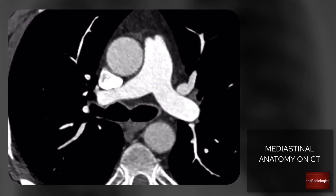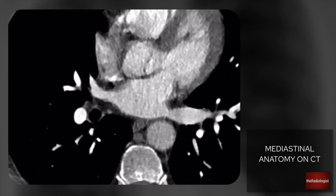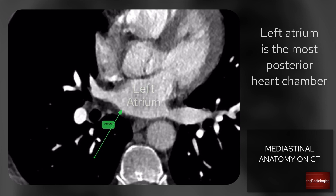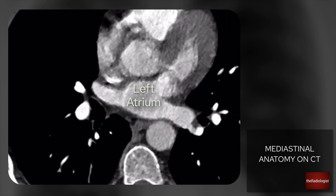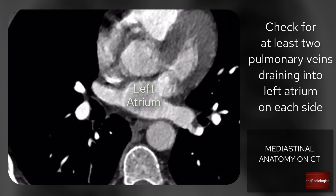The pulmonary arteries take deoxygenated blood out to the lungs and blood returns via this spider-like structure — the left atrium, which is the most posterior heart chamber. The number of pulmonary veins draining into the left atrium should be at least two on the right and at least two on the left. If you don't have at least two, those pulmonary veins could be draining somewhere else — into the systemic circulation such as the SVC or the left brachiocephalic vein — a condition called partial anomalous pulmonary venous return.